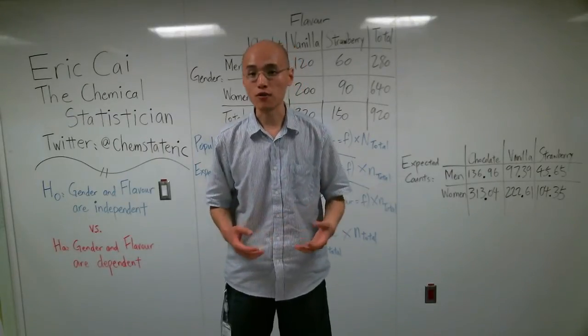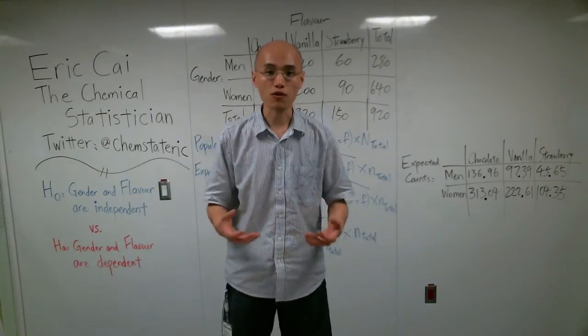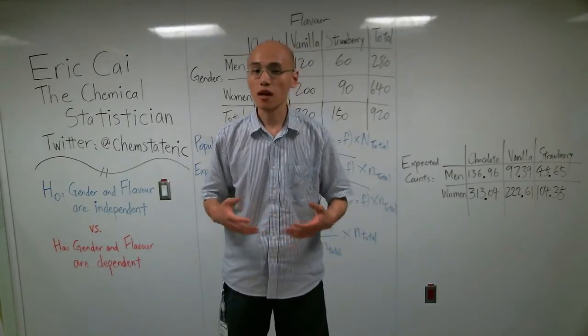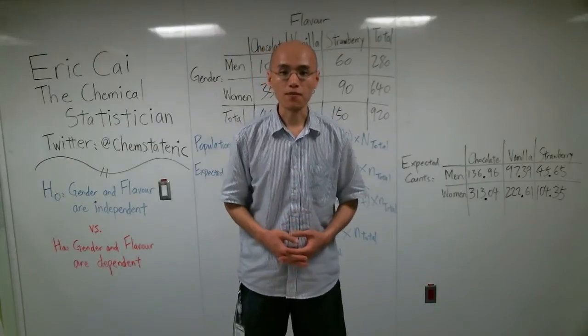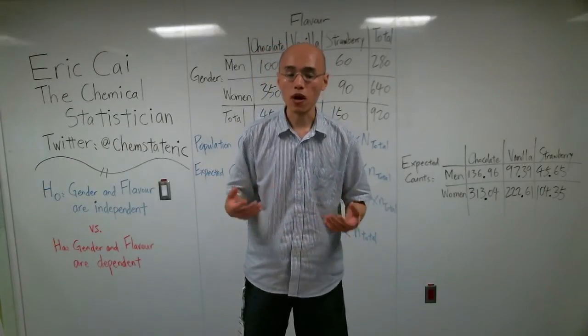In an earlier video, I showed how to calculate expected counts using marginal proportions and marginal totals. So this is just another way of doing the same thing. Now, this method, using joint probabilities,